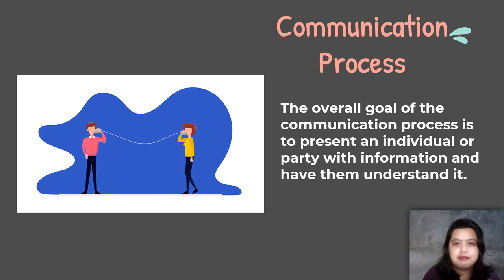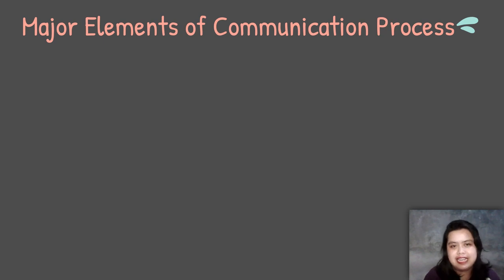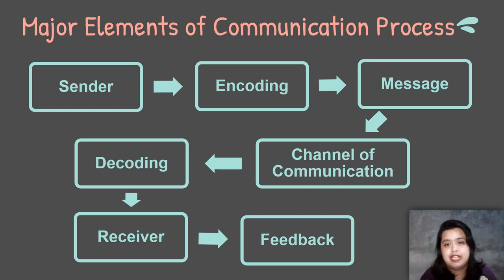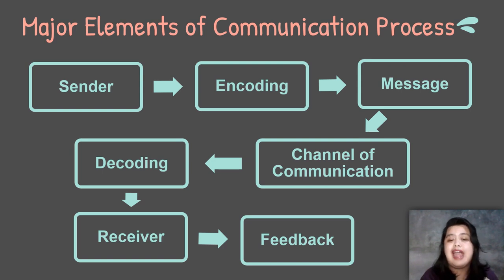What is involved in the communication process? We have seven major elements of the communication process. Let's go through them one by one. First, we have the sender, then encoding, then the message and the channel of communication, after that decoding, then the receiver, and lastly the feedback. After the feedback, it goes back and can become an interaction.